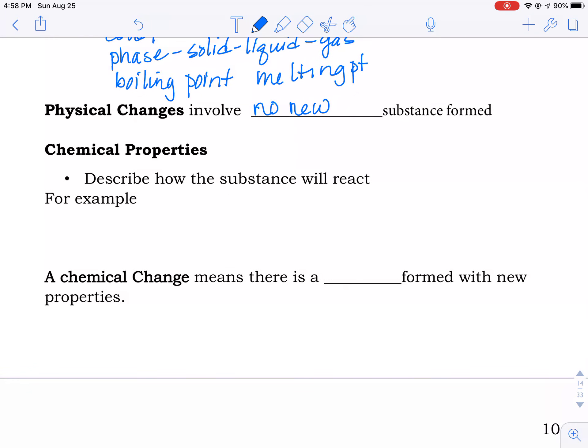Chemical properties describe how a substance will react. For example, flammability. And interestingly enough, sometimes they'll say inflammability, which to us sounds like it won't react, but that is actually old chemistry speak for something that will burn. Flammability, reactivity.